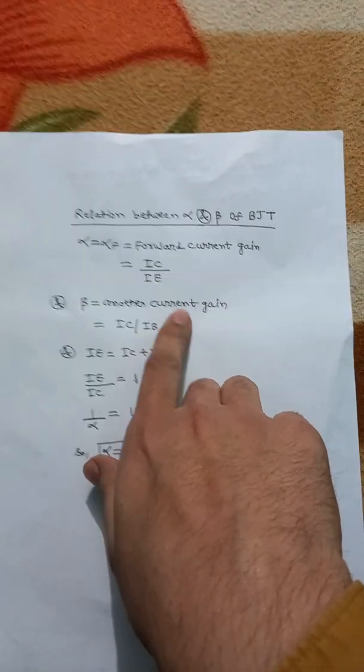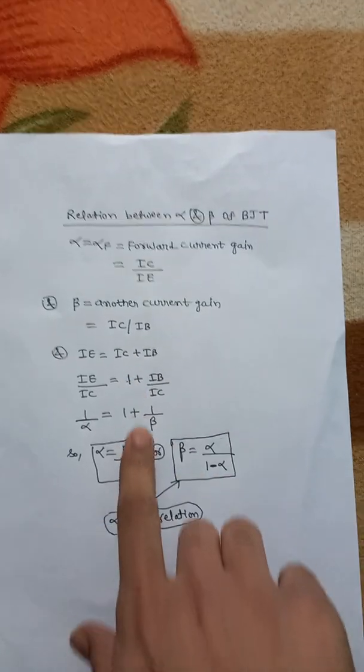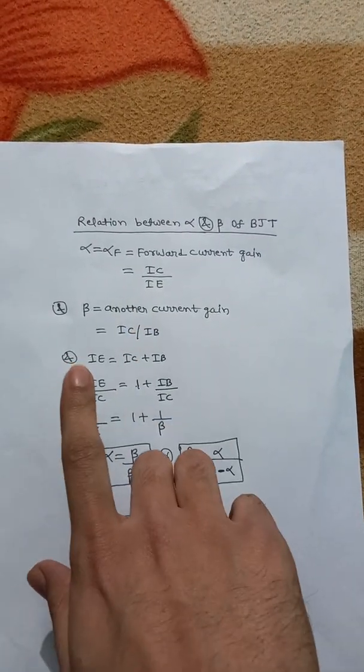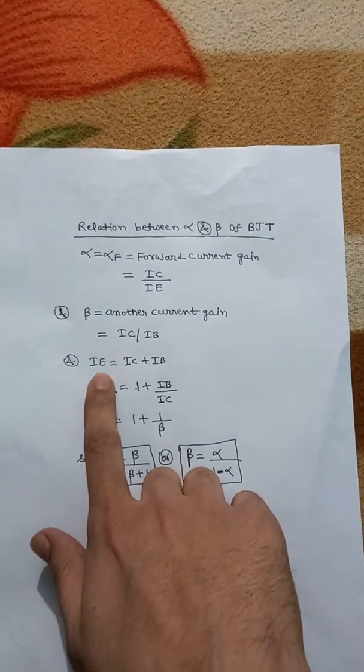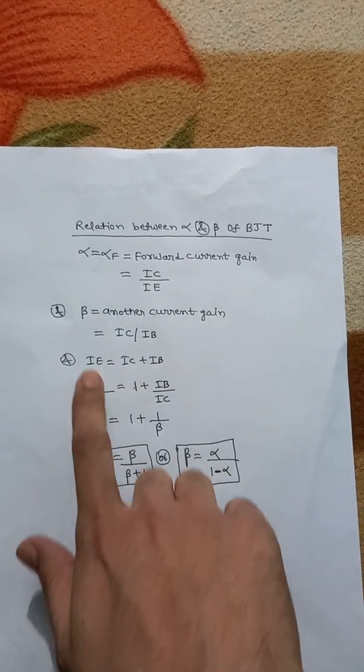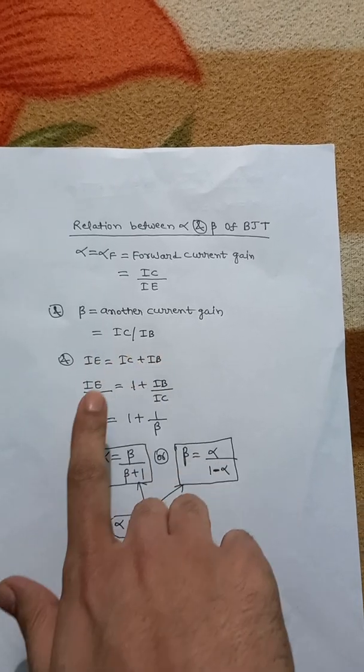Beta is another current gain which is equal to IC/IB. To get the relationship between alpha and beta, we use the relation IE = IC + IB and divide both sides by IC.